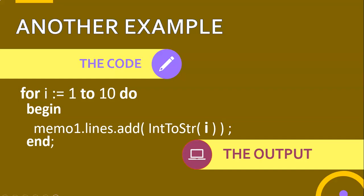Now exactly the same code, but I want to display from ten to one. The way a for loop works: it sets the 'i' variable to the starting value and checks if it is less than or equal to the ending value - that's how it keeps doing the loop. The moment 'i' is bigger than the end value, the loop will not execute. Here's the problem: I start with ten and it checks - is ten less than one? It's not, so the loop is already finished and this code will actually do nothing.